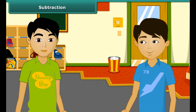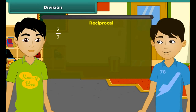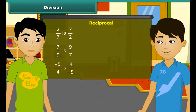You have learnt about multiplication. While multiplying a rational number by a positive integer, we multiply the numerator by that integer keeping the denominator unchanged. When multiplying two rational numbers, we multiply the numerators together and then the denominators together. Before division, let's learn about reciprocals. The reciprocal of 2 by 7 is 7 by 2, the reciprocal of 7 by 9 is 9 by 7, and the reciprocal of minus 5 by 4 is 4 by minus 5. When dividing one rational number by another, we multiply by the reciprocal of the other number.